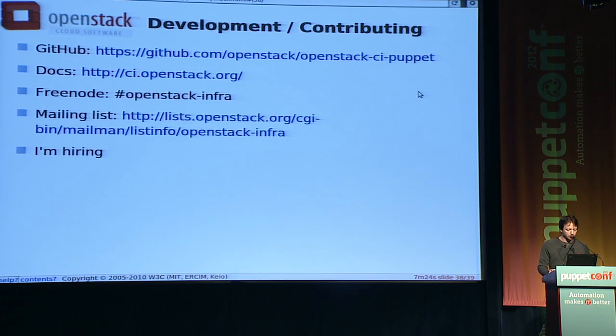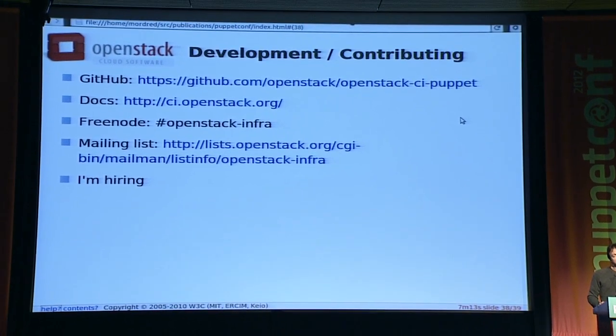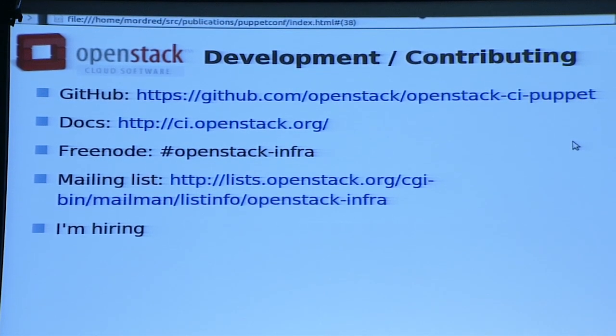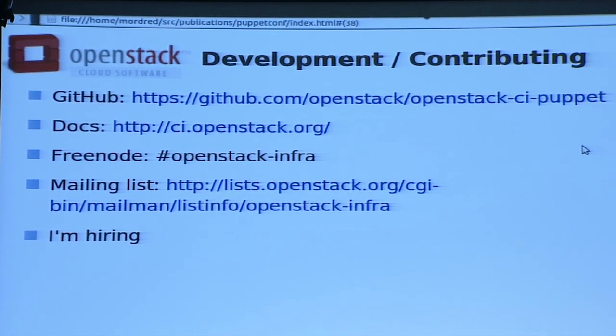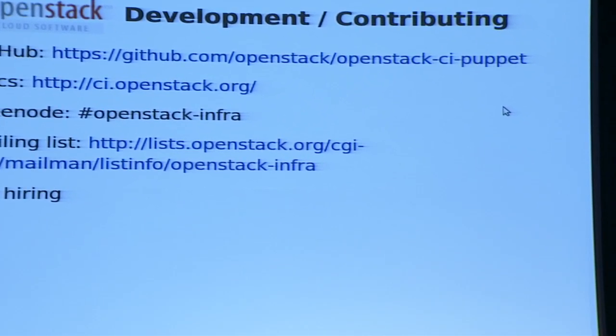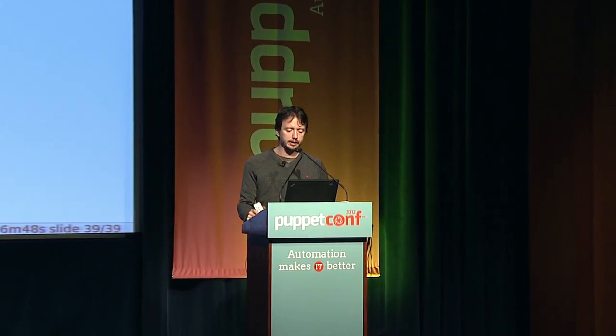If you'd like to dig in more to these things, all of our Puppet modules and our main Puppet repo is on GitHub in the OpenStack org, under openstack-ci-puppet. There are a few additional repos for things we've actually pushed to the Forge. We've got documentation for all of our systems there, we're on Freenode all the time, and we've got a mailing list for all of this. This talk is also online at GitHub under openstack-ci/publications in lovely HTML, so you can fork it if you want. I think that's close to time for me — yes, that is time in fact. Thank you.